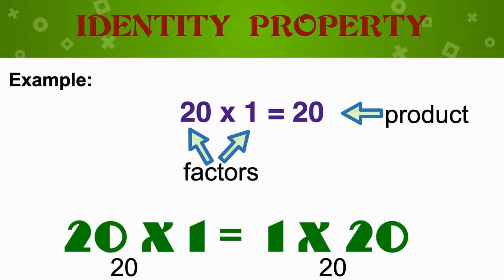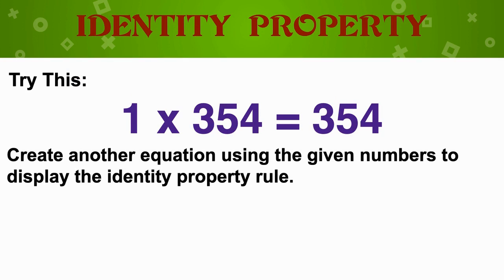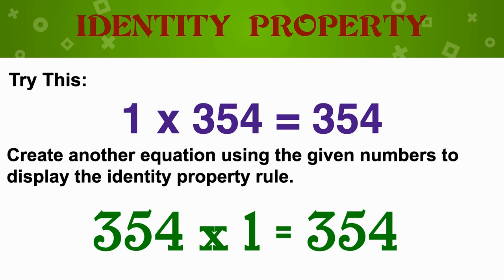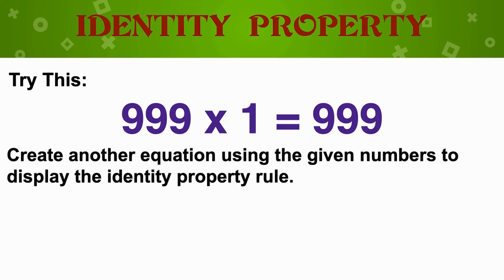That means 20 times 1 equals 20 and 1 times 20 is also equal to 20. Try this one: 1 times 354 is equal to 354. Can you think of another equation using the given numbers to display the identity property rule? If you said 354 times 1 is equal to 354, you are correct. Awesome job!